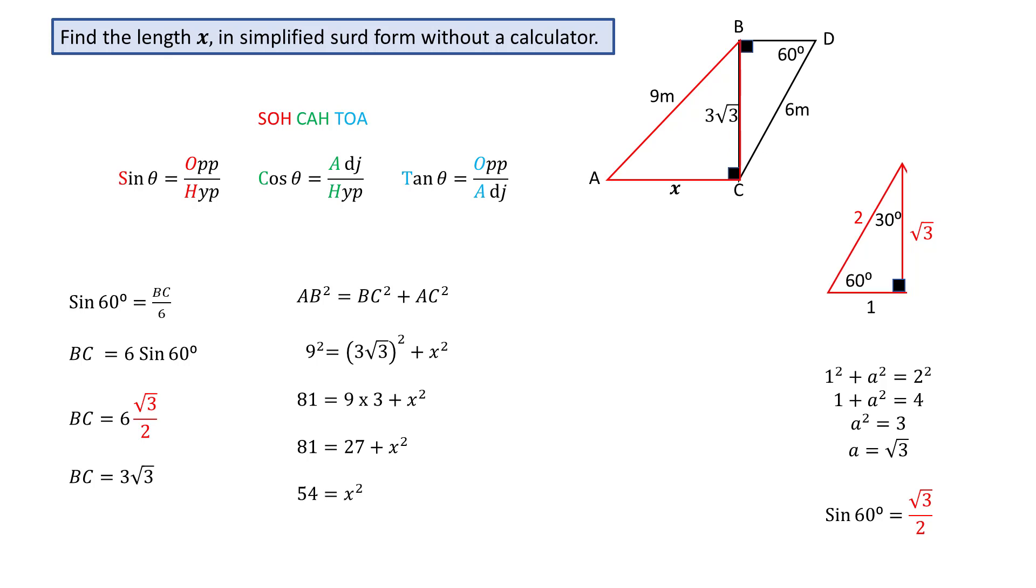Subtracting 27 from both sides gives x squared equal to 54. And finding the square root of both sides gives x equal to root 54.